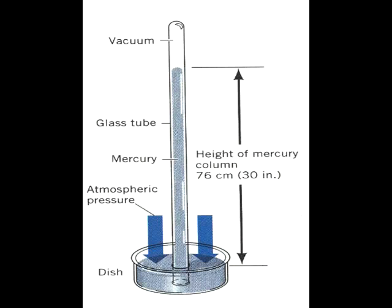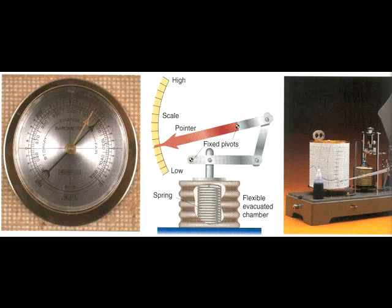Air pressure can be measured with a mercury barometer or an aneroid barometer. Aneroid means without fluid. It is basically a collapsible chamber which compresses proportionally to air pressure.